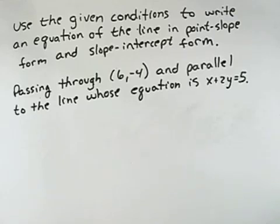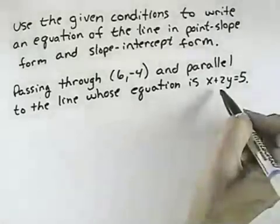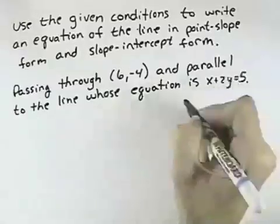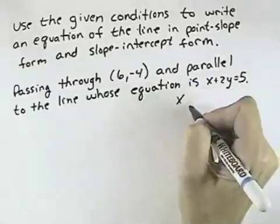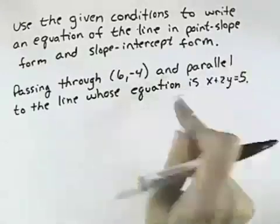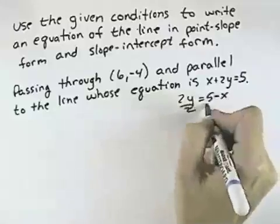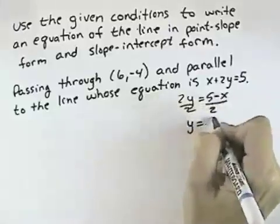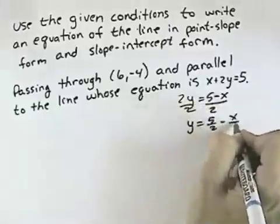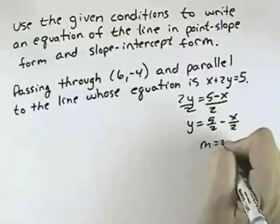Well, parallel means we want to find the slope of this line because our line will have the same slope. To do that, we'll solve for y. So I'm going to start by subtracting x from both sides so that I leave the 2y, but I have 5 - x. And then I'll divide by 2 to get y = 5/2 - x/2. And this slope, then, is -1/2.